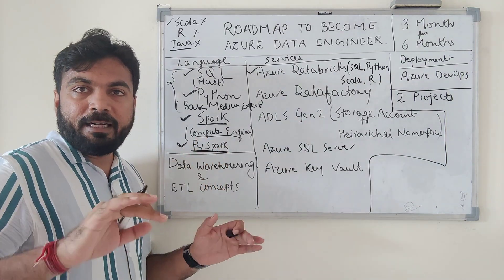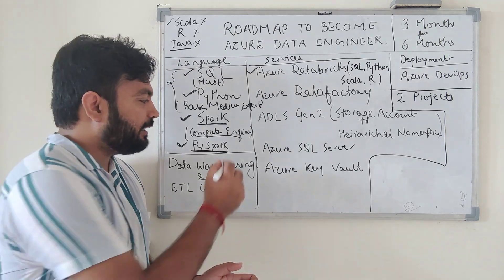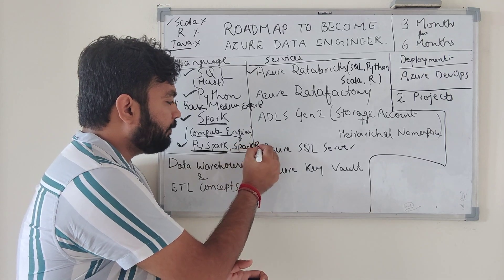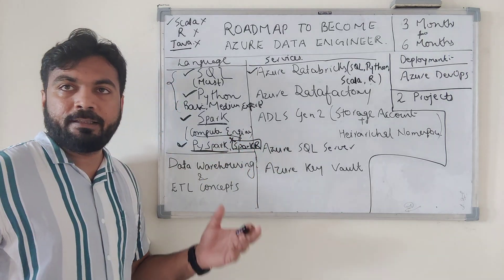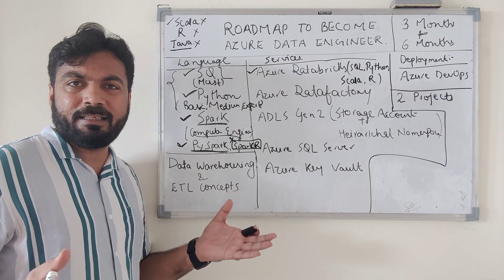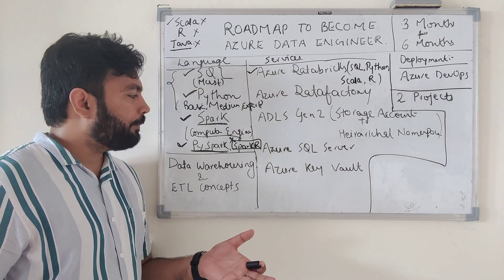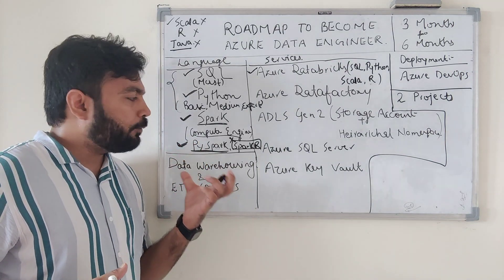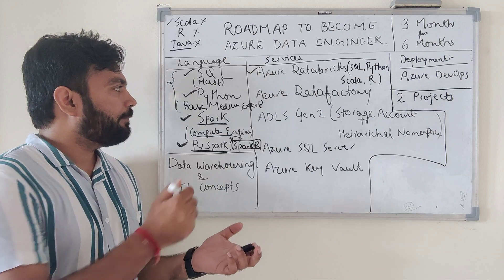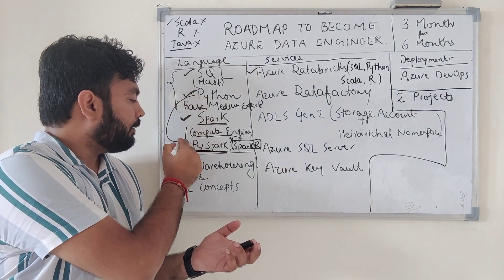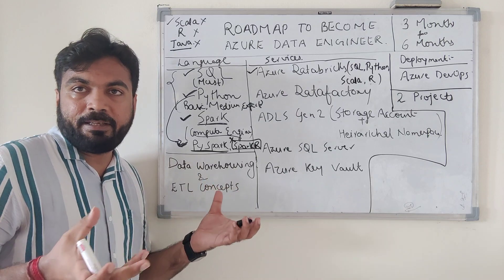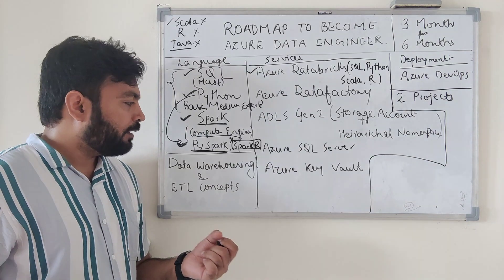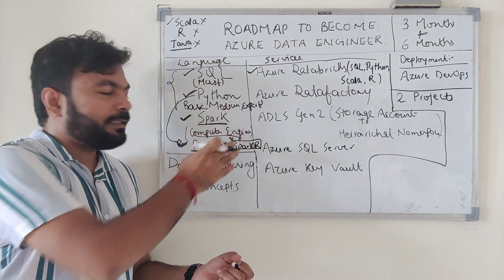If you are writing code over Spark using R, that is called SparkR. I suggest not going for SparkR unless there is a specific company requirement. PySpark is the most in-demand option in the industry because it uses Python APIs, and those Python API-based codes can be written over Spark to process data efficiently.